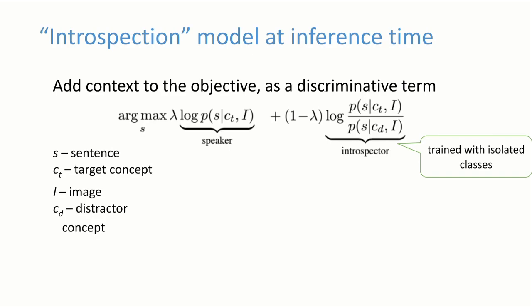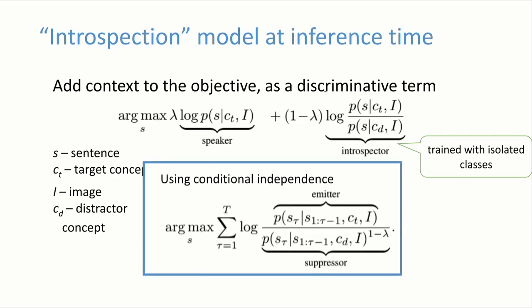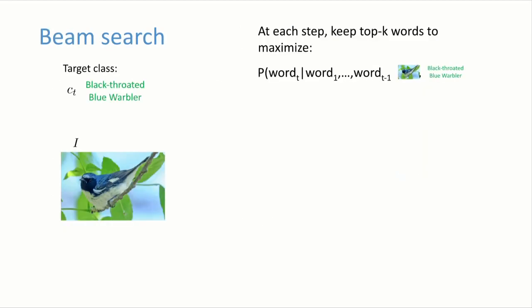The hyperparameter lambda balances how much you want to be generative or discriminative. You can rearrange these terms using conditional independence — a Markov chain assumption — and rewrite this as a sum of terms to maximize for every word in the sentence. To find discriminative descriptions following this objective, we build on beam search, which is widely used in sequence models. The idea is that you iteratively create word after word, and at every step you keep the top K most likely words by maximum likelihood.